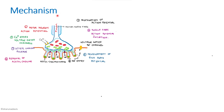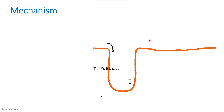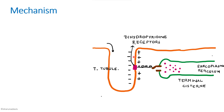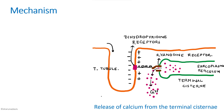Regarding the mechanism: an action potential causes depolarization of the muscle membrane at the motor end plate. The depolarization travels along the sarcolemma and reaches the T-tubule, so the whole AI junction gets depolarized. This activates the dihydropyridine receptor, which in turn causes activation of the ryanodine receptors. These act as calcium release channels, so all the calcium stored in the sarcoplasmic reticulum flows out from the terminal cisternae.